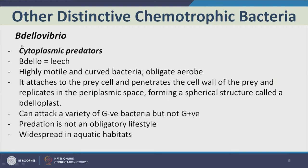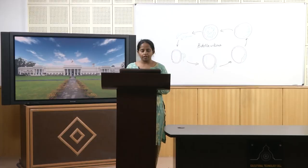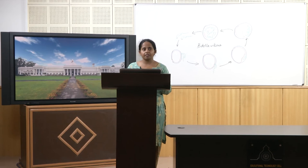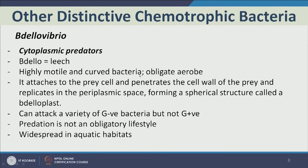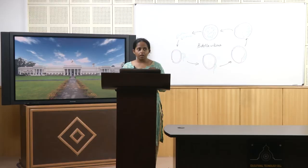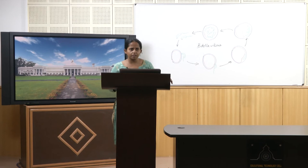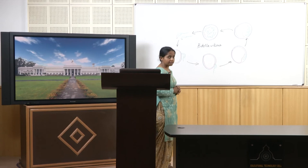Let us talk about Bdellovibrio — cytoplasmic predators that eat the cell inside out. The name means leech-vibrio. They are highly motile, curved bacteria that are obligate aerobes. They attach to the prey cell, penetrate the cell wall, and replicate in the periplasmic space forming a spherical structure called a bdelloplast. They can attack gram-negative bacteria but not gram-positive bacteria. Notably, for Bdellovibrio predation is not an obligatory lifestyle — they can actually act like a chemotroph and do not need to hunt and invade a cell — and they are widespread in aquatic habitats.